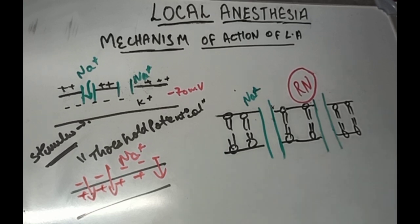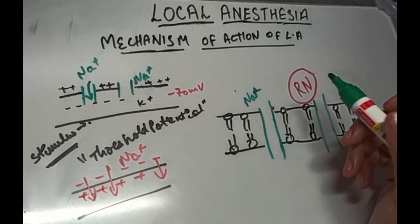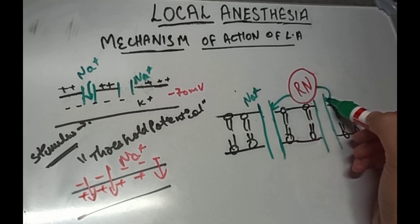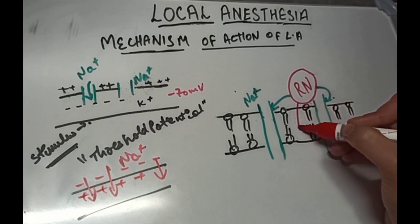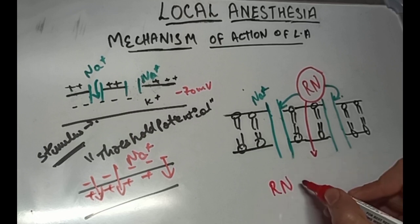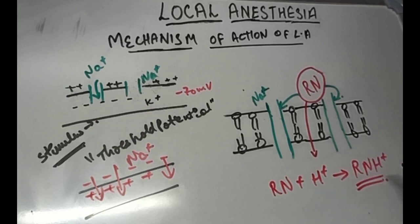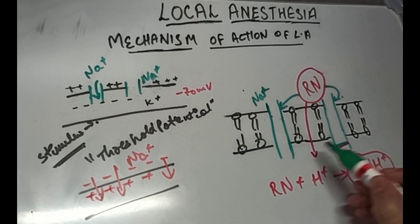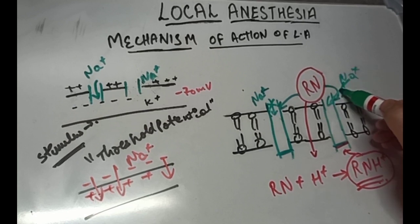Now let's see how LA actually blocks this conduction. First, there is displacement of calcium from the sodium channel receptor site. The LA molecule, which is in unionized form, can easily pass through the phospholipid layer of the nerve membrane. Inside, H+ ions lead to the ionization of the LA molecule. This ionized LA molecule then leads to the blockage of the sodium voltage-gated channels, so the channels are closed and sodium ions cannot flow in.